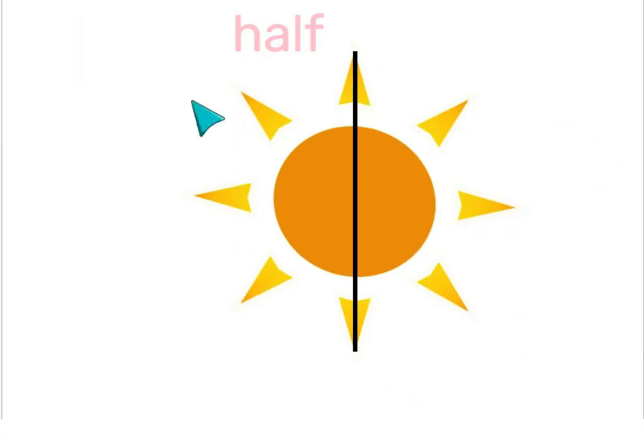Can we make half on this sun a different way? Absolutely. We can cut it in half horizontally, and we can even cut it in half diagonally.